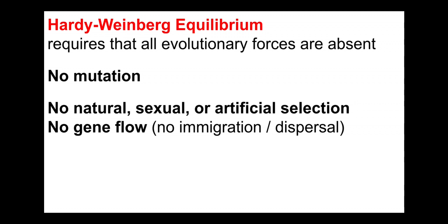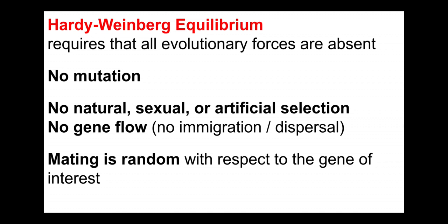Also a key assumption is that mating is completely random — no preferential mating, no like mating with like, no like mating with dislike. Mating is purely random. One caveat here is that literal random mating rarely happens, but for Hardy-Weinberg equilibrium to apply, it just requires that mating is random with respect to the gene of interest.